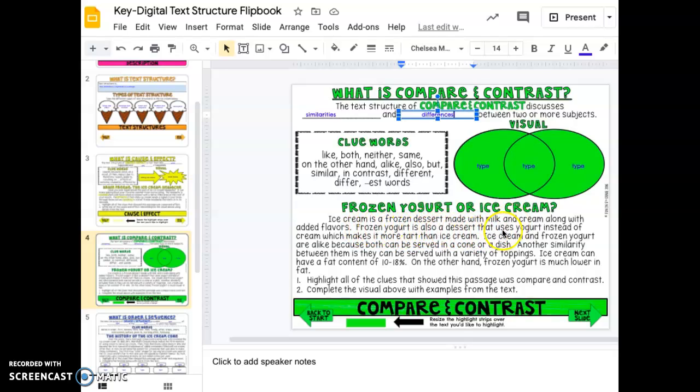Frozen yogurt or ice cream? Ice cream is a frozen dessert made with milk and cream along with added flavors. Frozen yogurt is also a dessert that uses yogurt instead of ice cream, which makes it more tart than ice cream. Ice cream and frozen yogurt are alike because both can be served in a cone or a dish.